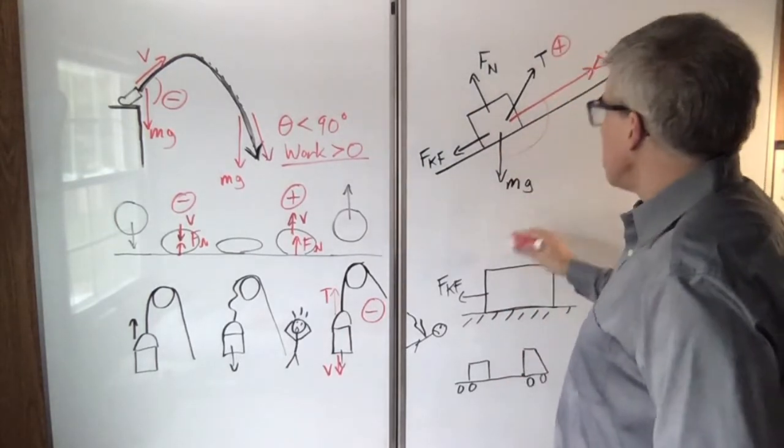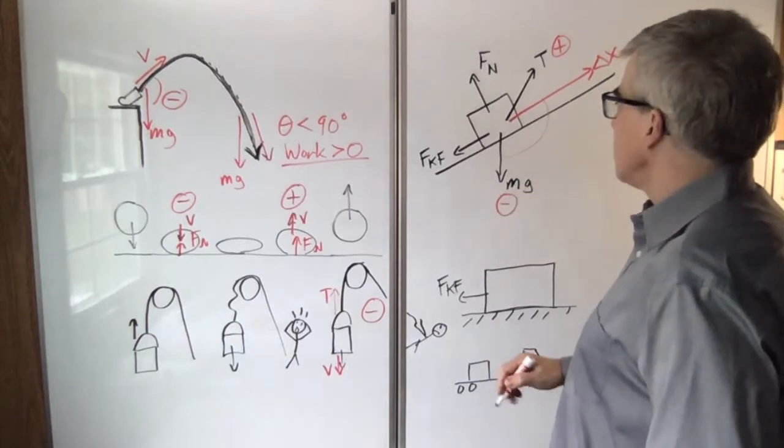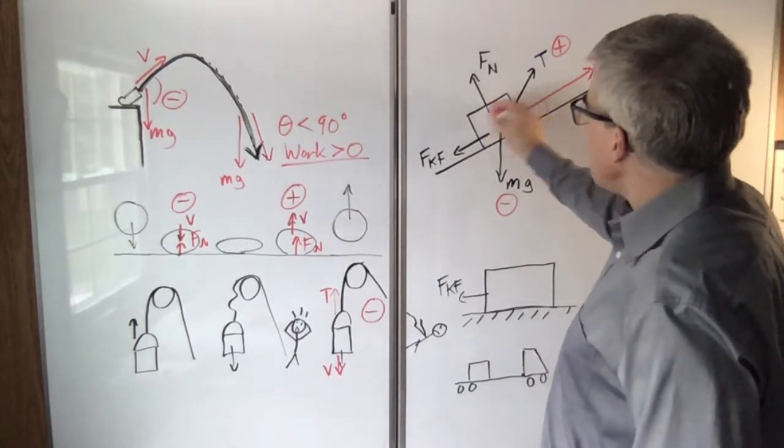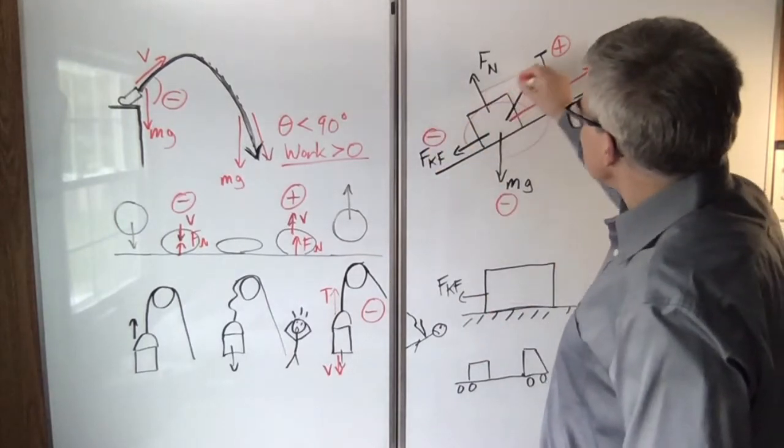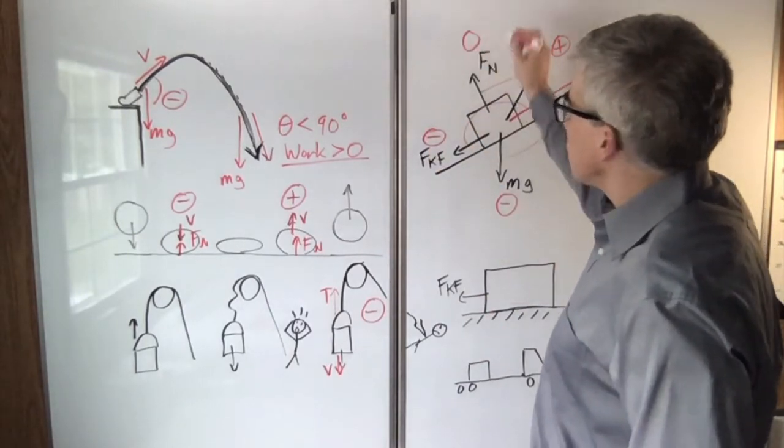Gravity is making a big angle, so that's doing negative work. Kinetic friction is making a 180 degree angle, so that's definitely doing negative work. And the normal force is exactly 90, so it does zero work.